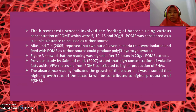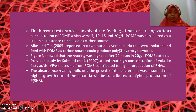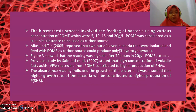The biosynthesis process involved feeding the bacteria using various concentrations of POME, which were 5, 10, 15, and 20 gram per litre. POME was considered a suitable substance to be used as a carbon source. Alias and Tan 2005 also reported that 2 out of 7 bacteria isolated and fed with POME as carbon source could produce polyhydroxybutyrate. Figure 3 showed that the reading was highest after 72 hours in 20 gram per litre POME extract. Valsamiyati et al. 2007 stated that higher concentration of volatile fatty acids (VFAs) from POME contributed to higher production of PHAs. The absorbance reading indicated bacterial growth, and it was assumed that higher growth rate would contribute to higher production of P3HB.